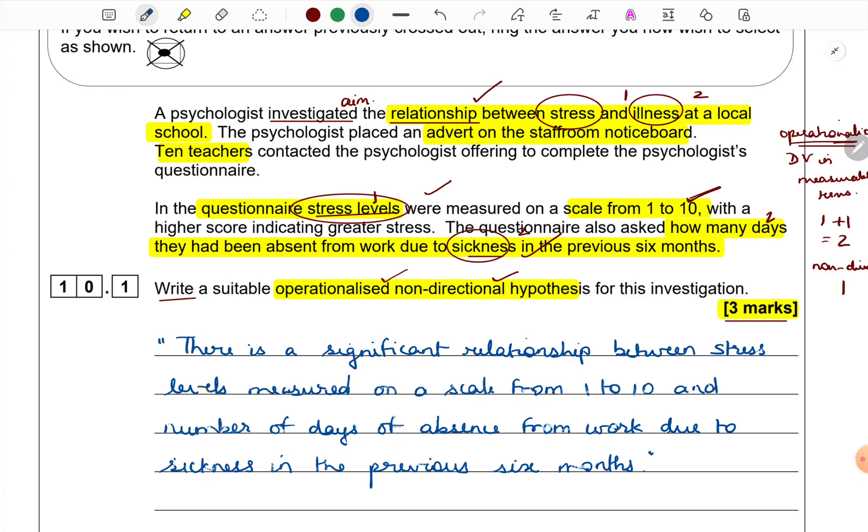One thing is I take my wording from the question itself. Next, just to show you about the marking again, since I have used the word significant relationship and not positive or negative correlation, I will be given one mark. Since I have written the operational definition of the first variable, I will get a second mark. Since I have written the operational definition of the second variable, I will get a third mark. That is how I will get my three marks on this answer.